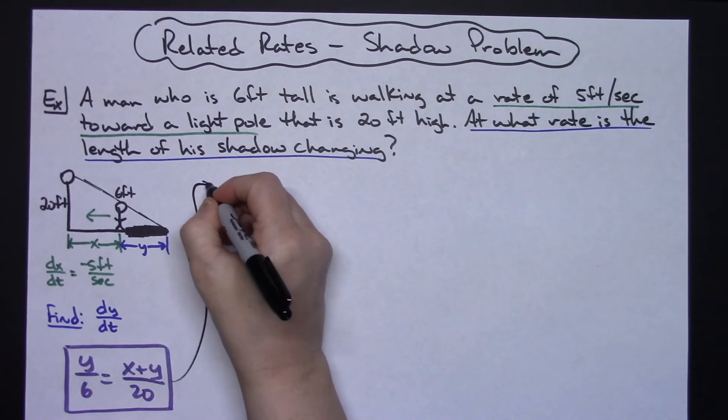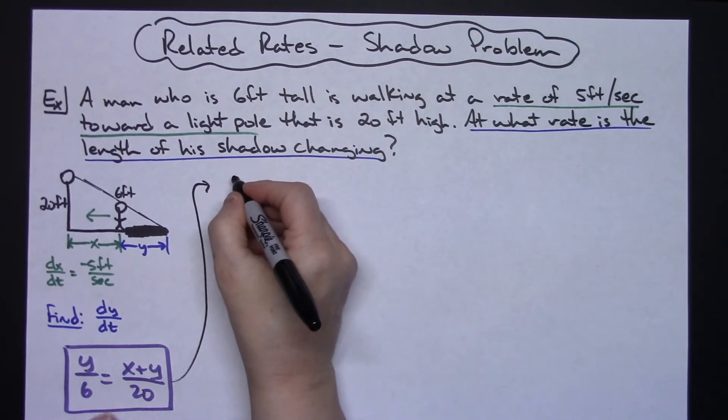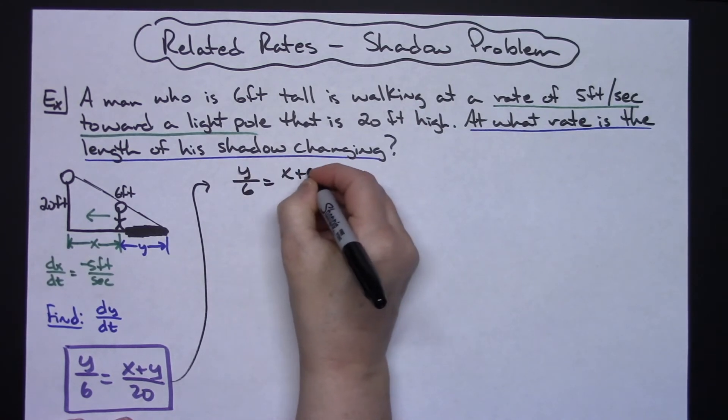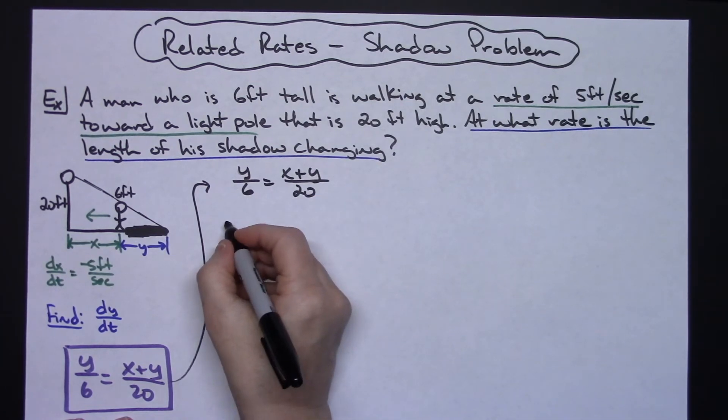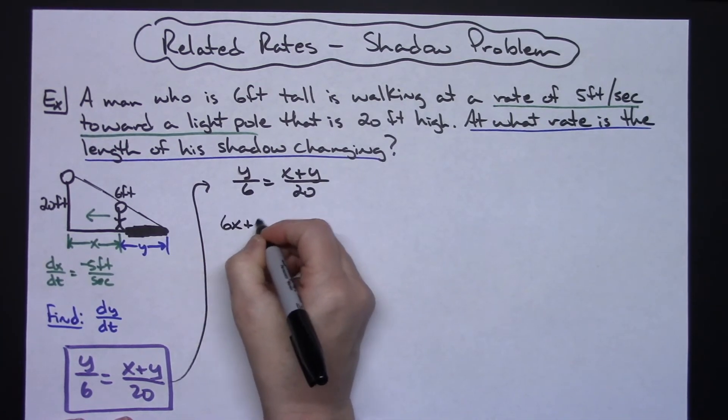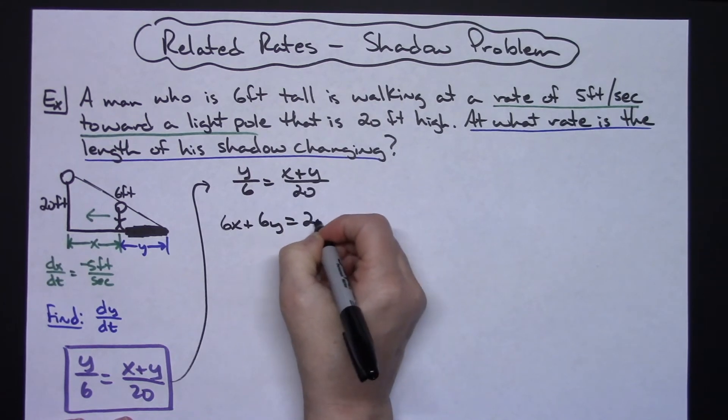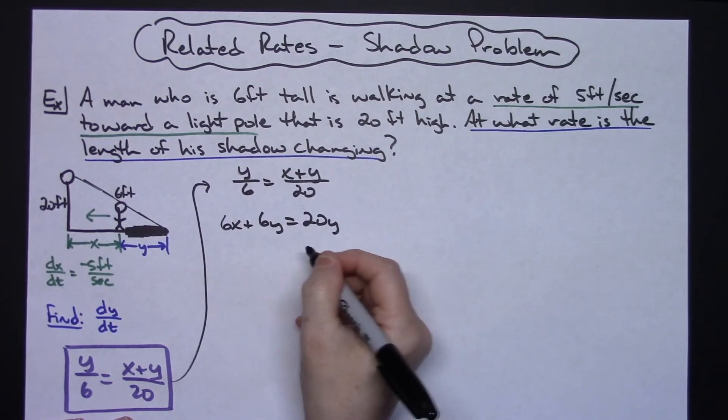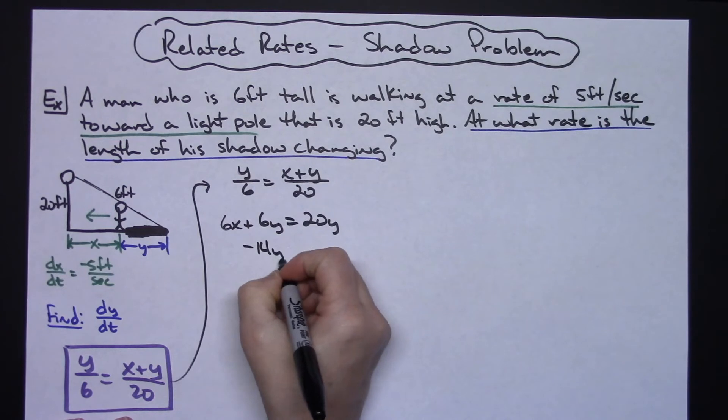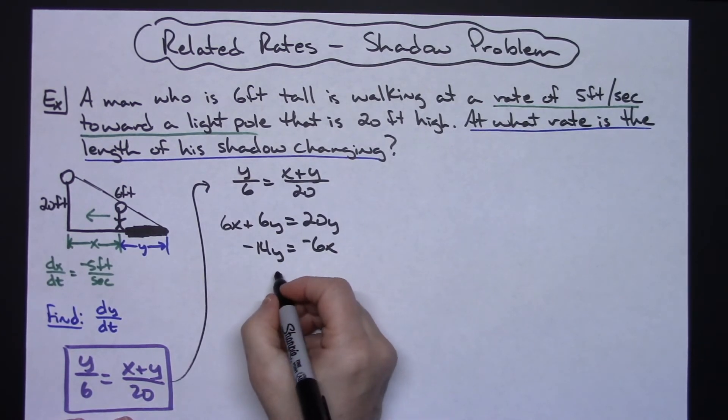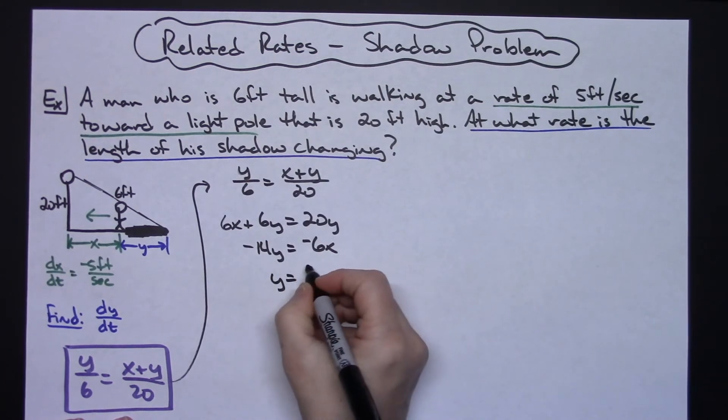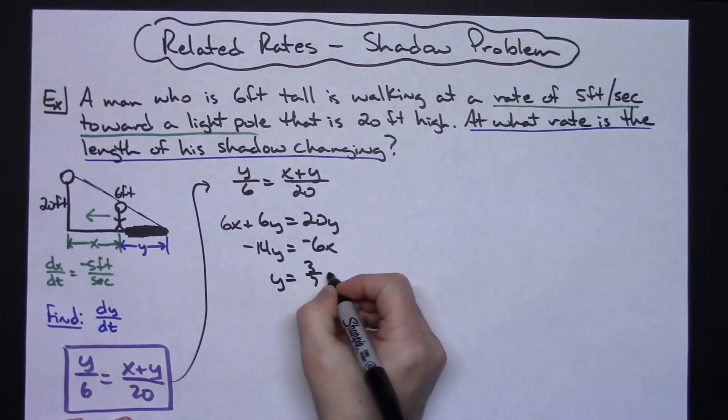Let's come up here and let's solve this proportion for y. So I'm going to have y over 6 equals x plus y over 20. Solving for y, let's cross multiply down, so we'll have 6x plus 6y equals 20y. Solving for y here, negative 14y equals negative 6x. Dividing both sides by that negative 14, I'll have y equals positive 3/7 x.